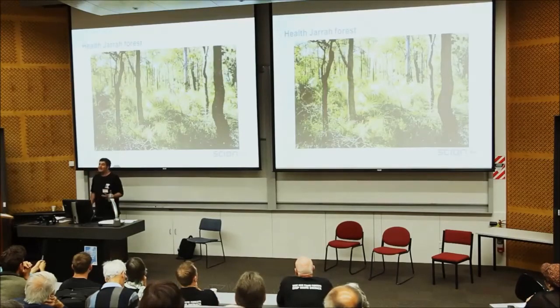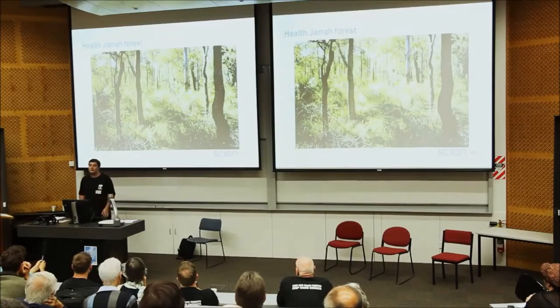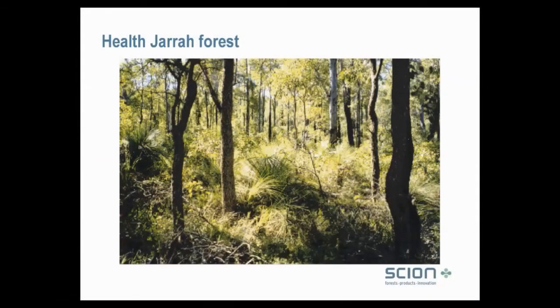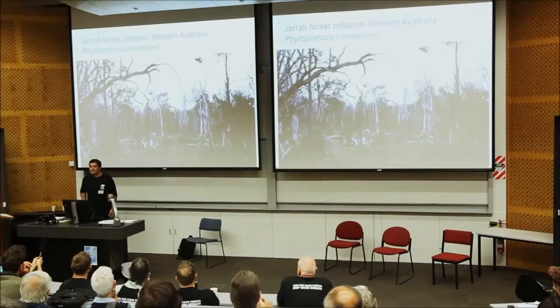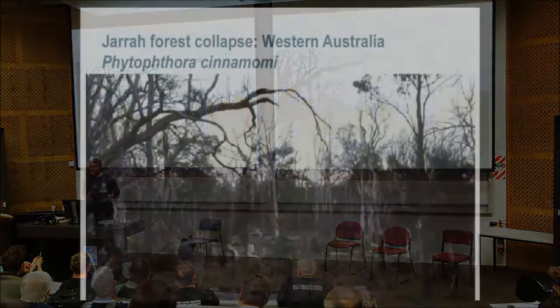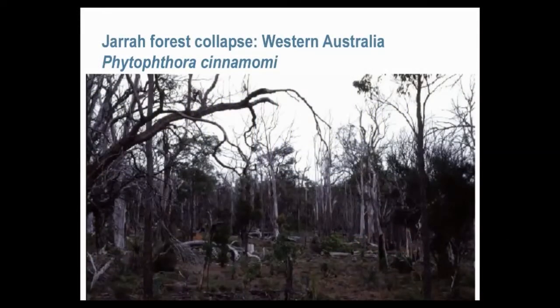I just want to give people some examples — New Zealand is not alone. Other countries are suffering similar declines caused by introduced phytophthora species that have been introduced into environments which have not evolved mechanisms to resist these pathogens. This is a bit of healthy jarrah forest within Western Australia. And this is jarrah forest that suffered a collapse caused by Phytophthora cinnamomi, a phytophthora species that is common throughout New Zealand. Many of these sites you can now play golf on — these were dense forests that people could not walk through before.